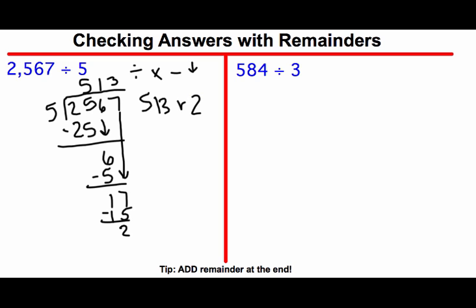So to check an answer when you have a remainder, the tip is you're going to add the remainder in at the end like our tip says down here. So we're going to do everything we would do on a normal checking your answer problem. We're going to take this top number, we're going to take our answer, this number here, and we're going to multiply it by 5.